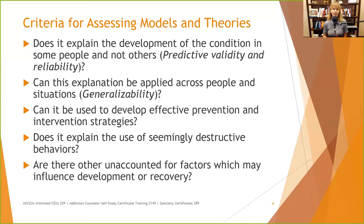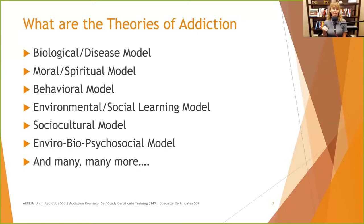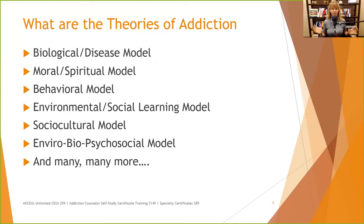Are there other unaccounted-for factors that may influence the development of the problem or recovery? A lot of these theories only account for a small sliver of the different variables that can cause dysphoria in humans. Our theories include: biological, moral or spiritual, behavioral, environmental, and sociocultural — or we can combine them all in the enviro-bio-psycho-social model. There are many sub-theories under each of these overarching ones.